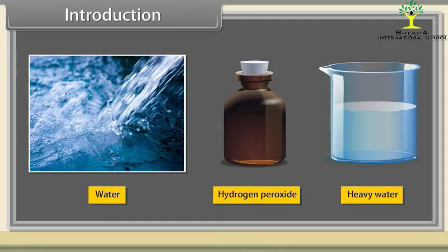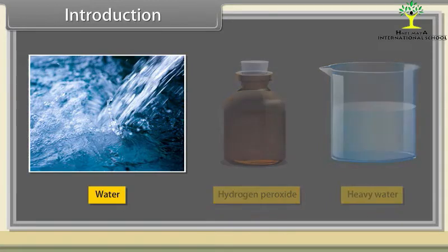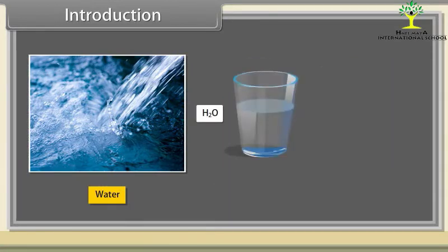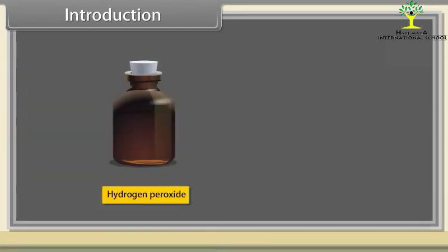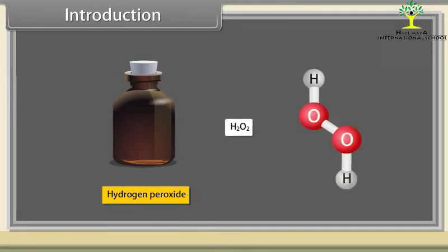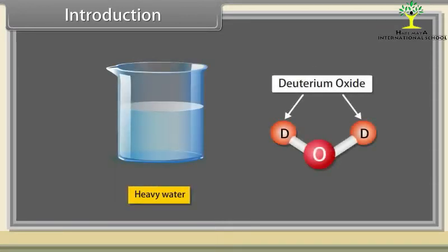Water is a chemical substance and its chemical formula is H2O. It is a colorless and transparent liquid. It contains one oxygen atom and two hydrogen atoms. Hydrogen peroxide is a combination of hydrogen and oxygen. Its chemical formula is H2O2. Heavy water is a deuterium oxide. It is another form of water which contains hydrogen deuterium isotope.